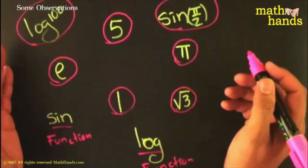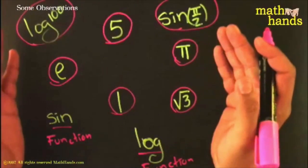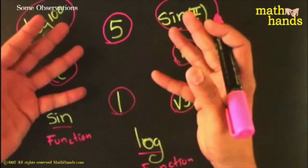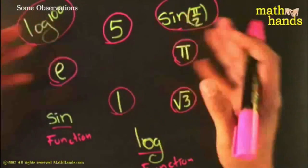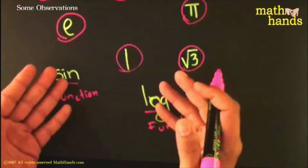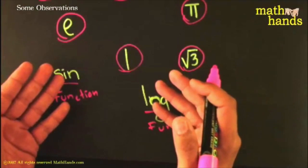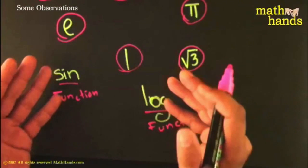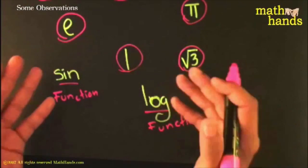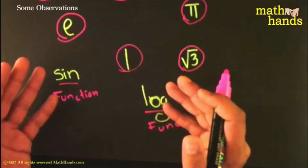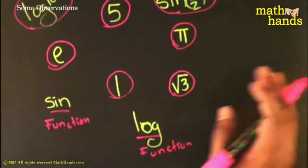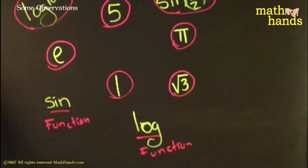Something absolutely important: these numbers behave like numbers in everything that numbers do. These functions are not numbers, so you cannot expect them to behave like numbers do. They behave like functions - they are totally different animals. Let me show you what I mean by that.